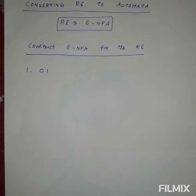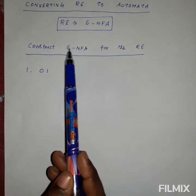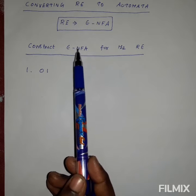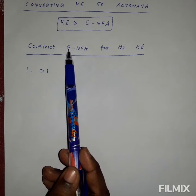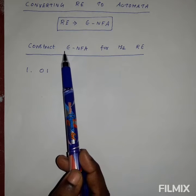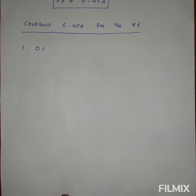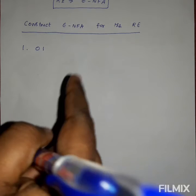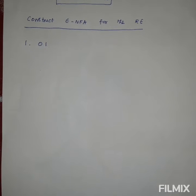Construct epsilon-NFA for the regular expression. You saw how to construct NFA for the regular expression, but here it is epsilon-NFA. NFA is a non-deterministic finite automata — a mathematical model. Epsilon-NFA is an NFA where epsilon, a null string, is used as an input symbol to pass from one state to another state. Now we will see how to draw the epsilon-NFA for a regular expression. Consider the regular expression '01' — here 0 is one alphabet, 1 is another alphabet, and 01 is a string, which is also a regular expression.